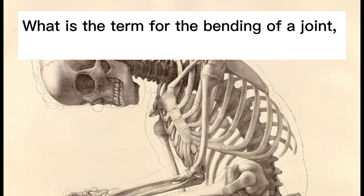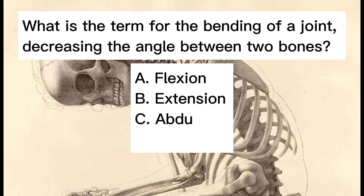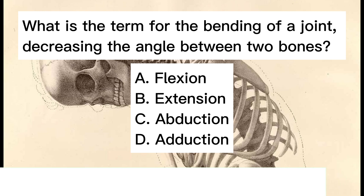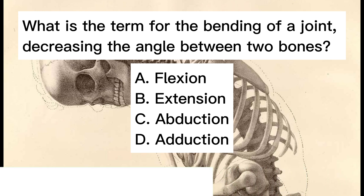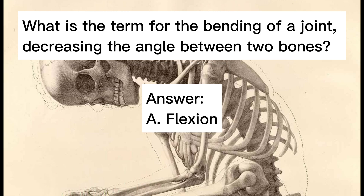What is the term for the bending of a joint, decreasing the angle between two bones? A. Flexion. B. Extension. C. Abduction. D. Adduction. Answer: A. Flexion.